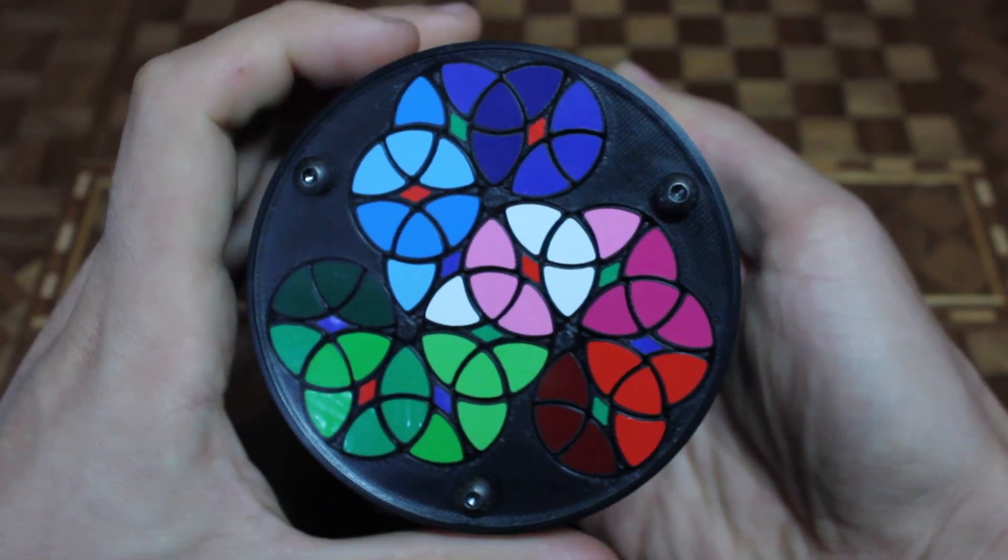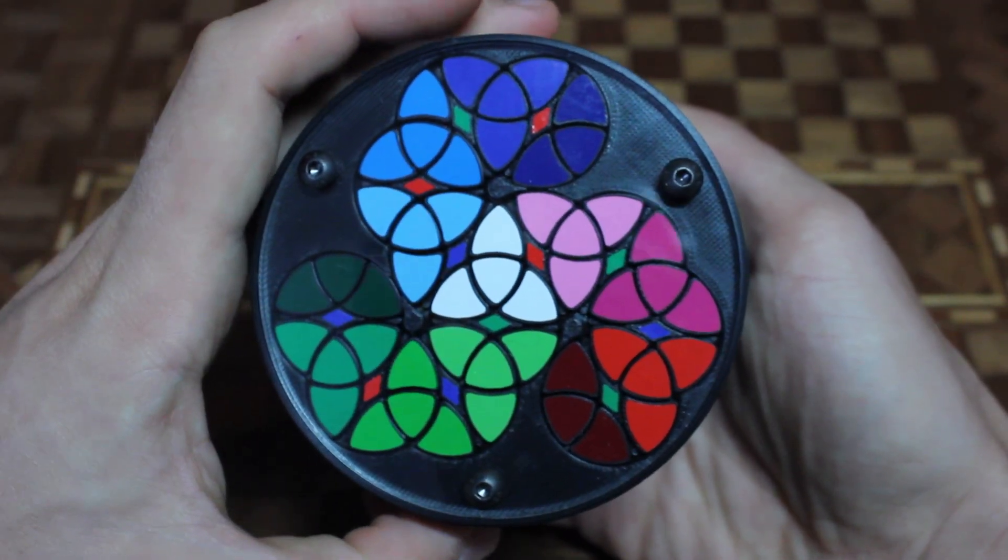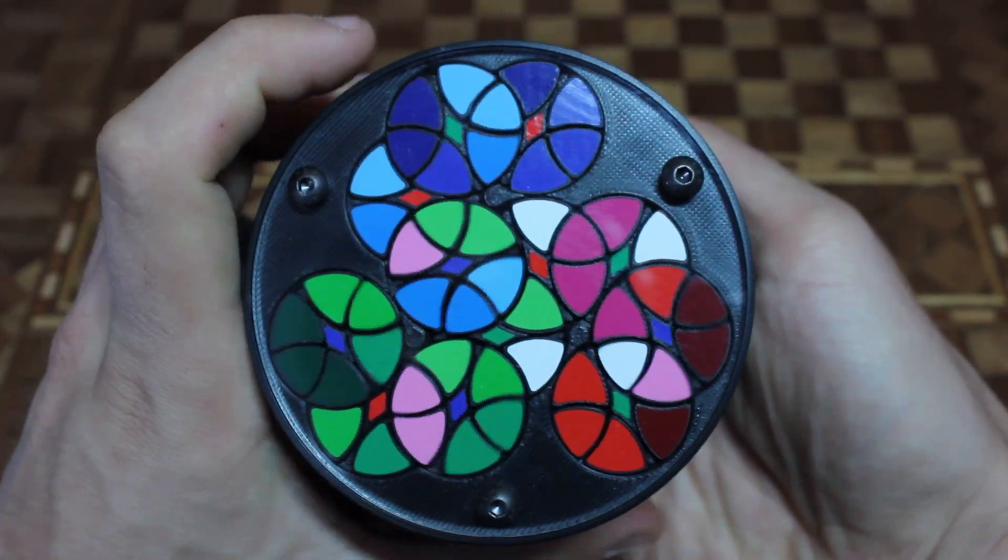Only half turns are possible, so the puzzle is scrambled and solved by moving each color group by 180 degrees in different sequences.